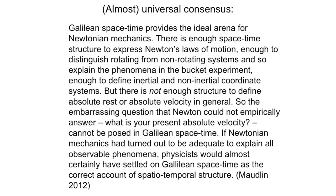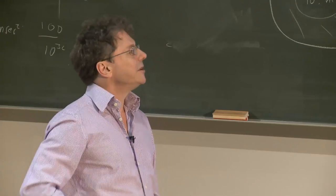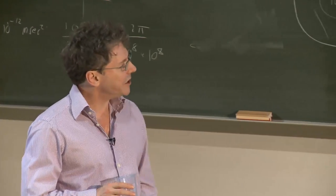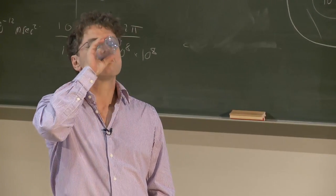So this is Galilean spacetime. And here is a very common view. I've put it as almost universal consensus. Galilean spacetime provides the ideal arena for Newtonian mechanics. There's enough spacetime structure to express Newton's laws of motion, enough to distinguish rotating from non-rotating systems, and so explain the phenomena in the bucket experiment. Enough to define inertial and non-inertial coordinate systems, but there is not enough structure to define absolute rest or absolute velocity in general. So the embarrassing question that Newton could not empirically answer, what is your present absolute velocity, cannot be posed in Galilean spacetime. If Newtonian mechanics had turned out to be adequate to explain all observable phenomena, physicists would almost certainly have settled on Galilean spacetime as the correct account of spatiotemporal structure. This is from Tim Maudlin's very nice book published last year, Philosophy of Physics.